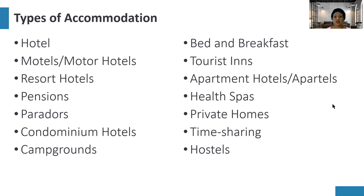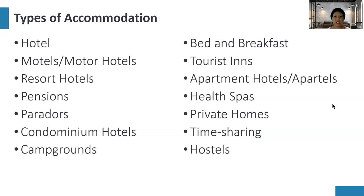In the couch surfing organization, members email each other and ask if accommodation is available. It is a friendly type of partnership — for example, an American visiting the Philippines can message a co-member and avail of a discounted rate for private home accommodation.